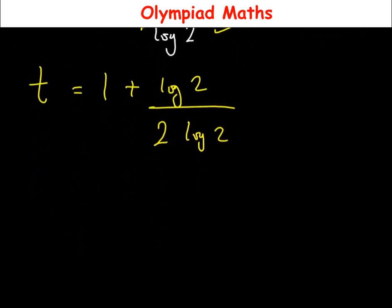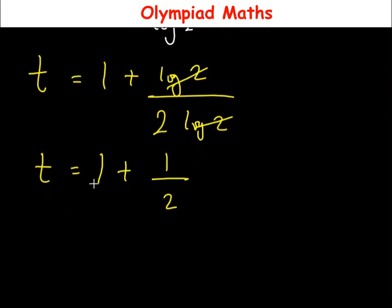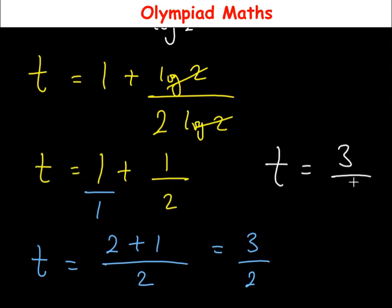So t equals 1 plus log(2) over 2·log(2). Dividing log(2) by log(2) gives 1 over 2. Writing 1 as 2 over 2 and finding the common denominator of 2: t equals (2 + 1) over 2, which is 3 over 2. So the value of t is 3/2.